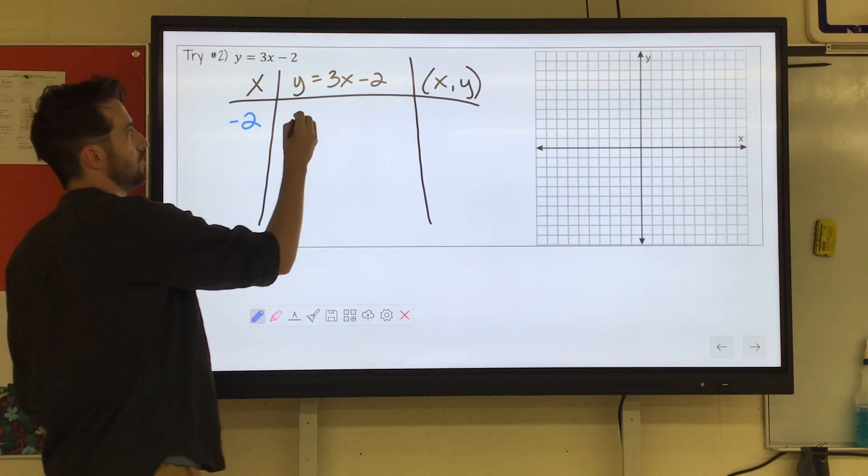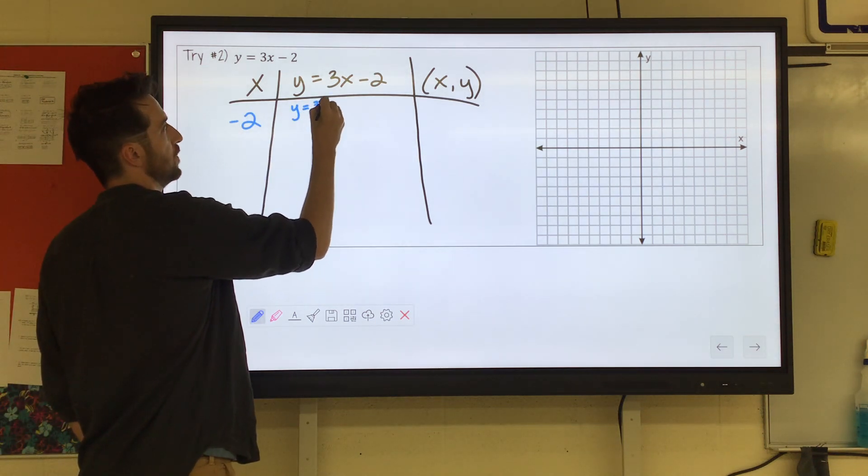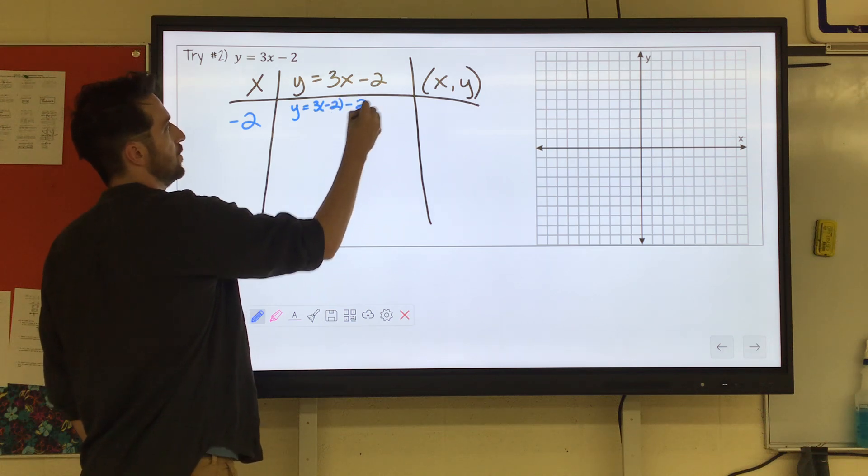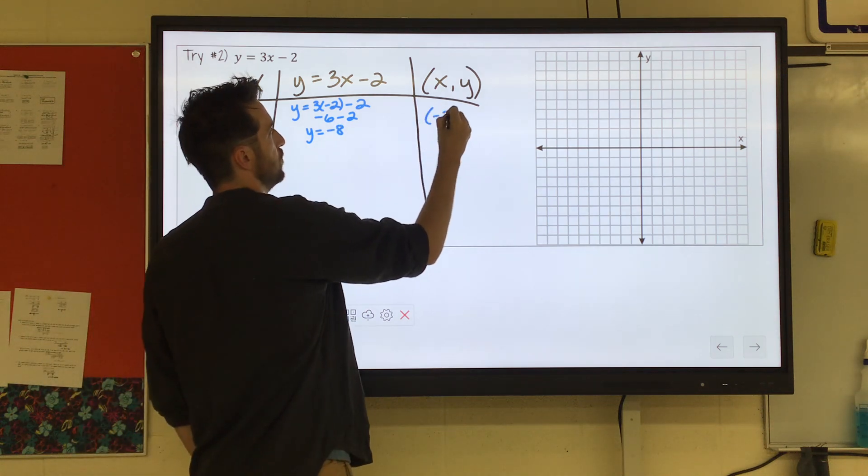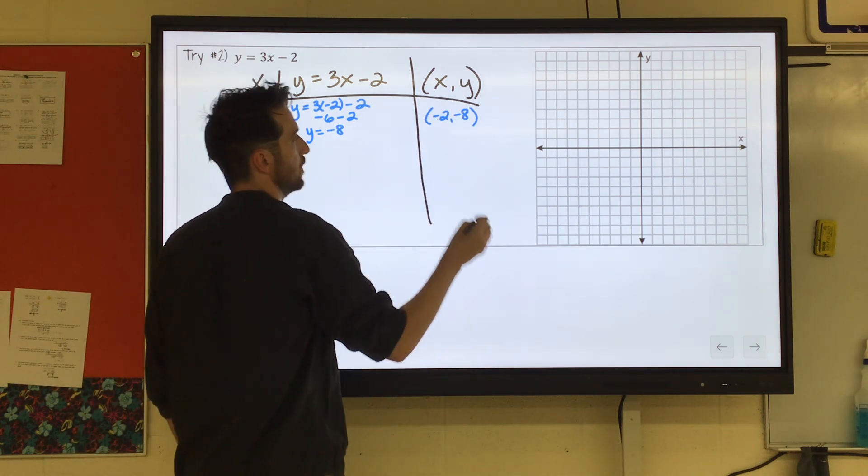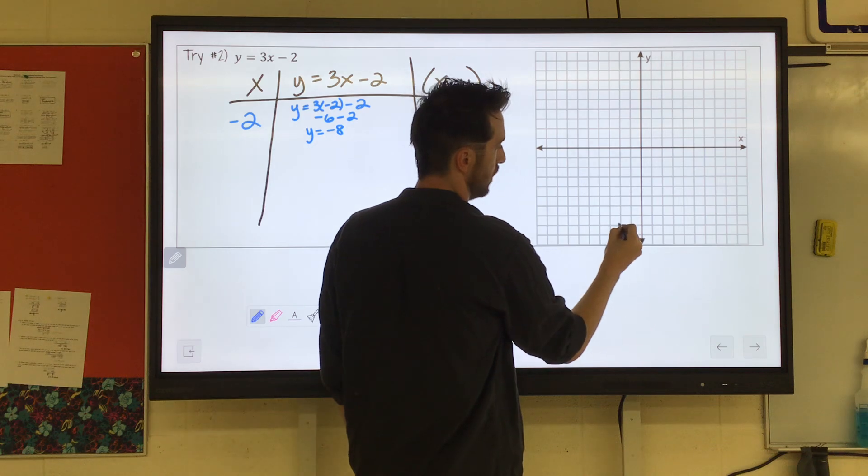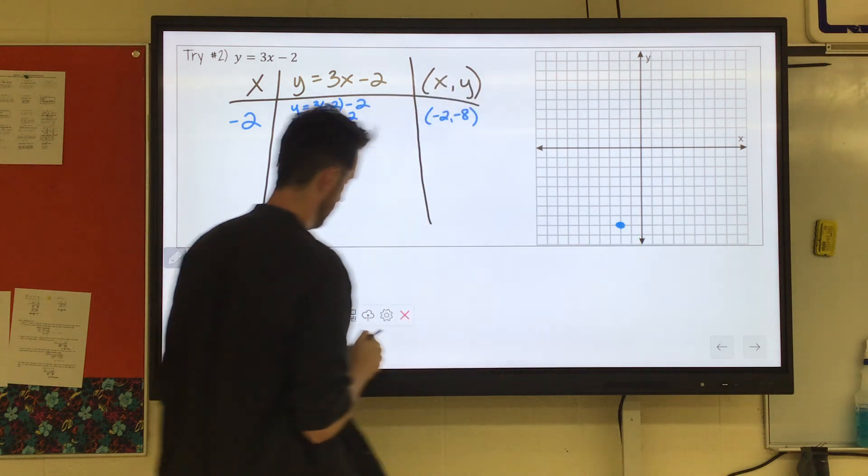So I'm going to choose negative 2. y equals 3 times negative 2 minus 2. That would be negative 6 minus 2, which is negative 8. So we have negative 2, negative 8. Negative 2, negative 8, right there.